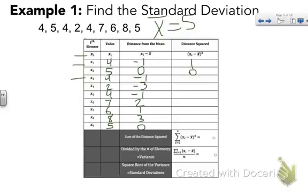So 1 squared is 1, 0, 1, 9, 1. 2 squared is 4, 1 squared is 1, 3 squared is 9, and 0 squared is 0.